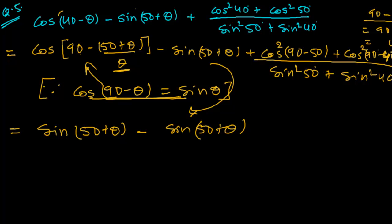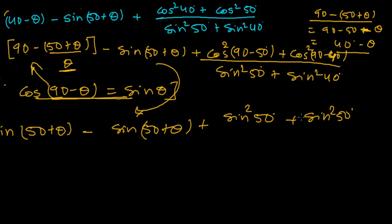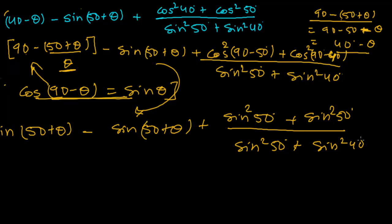For cos squared(90 minus 50): applying cos(90 minus theta) = sin theta, this becomes sin squared 50. And cos squared(90 minus 40) becomes sin squared 40. So the numerator now has sin squared 50 plus sin squared 40, and the denominator is sin squared 50 plus sin squared 40.